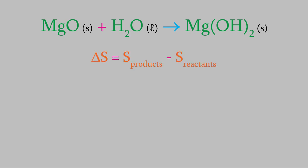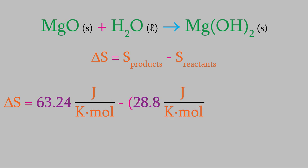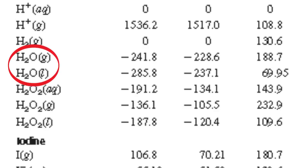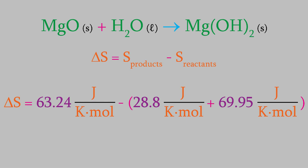The entropy of magnesium hydroxide is 63.24 joules per kelvin mole. Magnesium oxide is 28.8, and liquid water is 69.95. Notice that some compounds, including water, appear in the Appendix more than once. That's because the entropy is different depending on whether the compound is a gas, a liquid, or a solid. If more than one phase is listed, be careful to use the data for the phase that you really want. Anyway, when we solve this equation, we find that the entropy change for the reaction is negative 33.51 joules per kelvin mole.